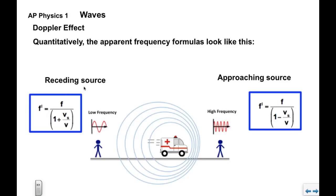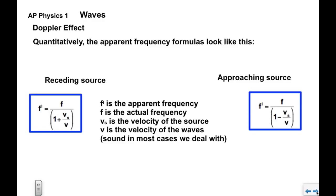For the receding source, if it's moving away from you, it looks very similar. F prime is the receding apparent frequency. We have 1 plus Vs over V in the denominator. So again, F prime is the apparent frequency, F is the actual frequency, Vs is the velocity of the source, V is the velocity of the waves. In this case, the velocity of sound.